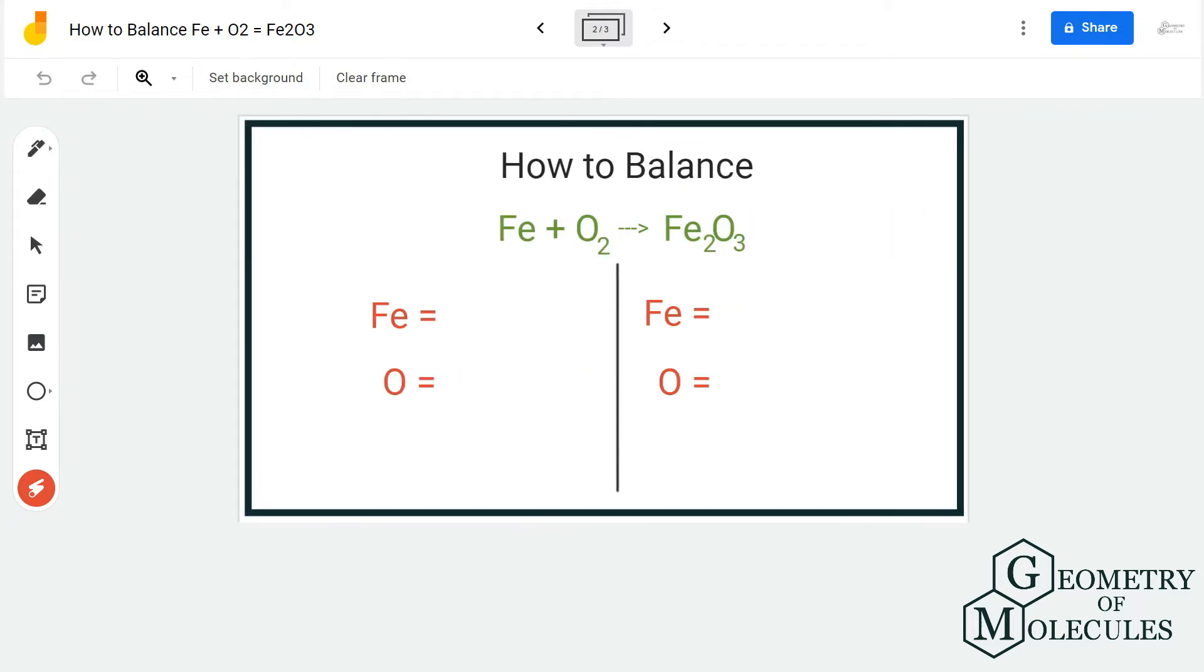To balance this equation, we are first going to count the number of atoms on both sides and try to balance it. So on the reactant side we have one iron atom and two oxygen atoms, whereas on the product side we have two iron atoms and three oxygen atoms.